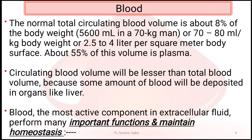The normal total circulating blood volume is about 8% of body weight — that means 5600 ml in a 70 kg adult male, or 70 to 80 ml per kg body weight, or 2.5 to 4 liters per square meter body surface area. About 55% of this volume is plasma. Circulating blood volume will be lesser than total blood volume because some amount of blood is deposited in organs like the liver.